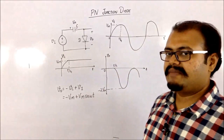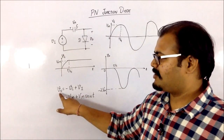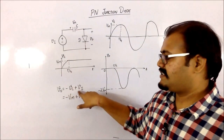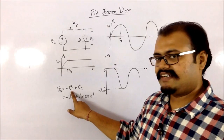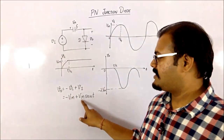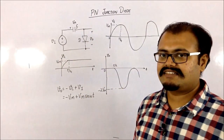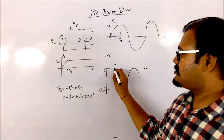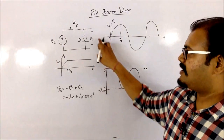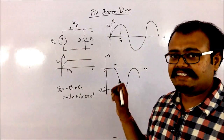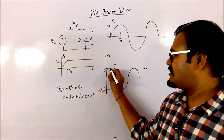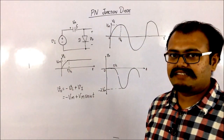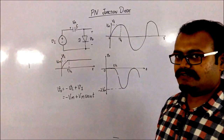The output voltage is given by minus Vc plus Vi — that is, minus Vm plus the input sine voltage. Drawing that graph, from 0 to T/4 the output voltage is zero because the diode was on and we consider V gamma as zero — so zero voltage appears across it. After T/4 the output is given by the input sine wave shifted down by Vm.